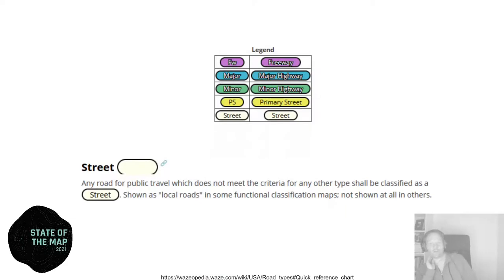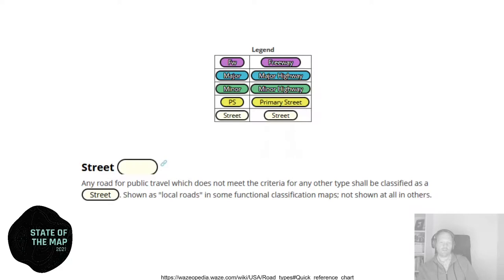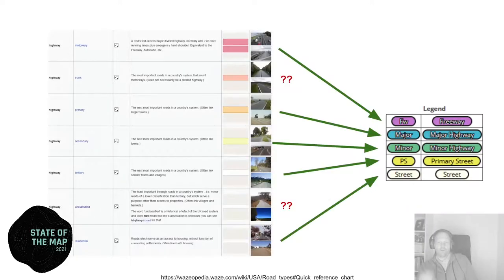If you look at Waze, they only have five types: freeway, major highway, minor highway, primary street, and street. What's interesting about that bottom 'street' type is that it's basically defined as any street that's not one of the other types - it's negatively defined as a bucket category for anything that doesn't meet the criteria for anything else. So I think for OSM we could do something similar: instead of having unclassified and residential separately, we could just have one type called 'street'.